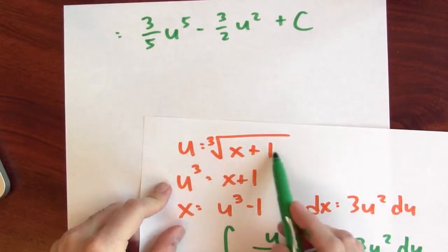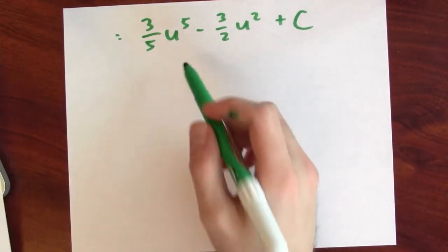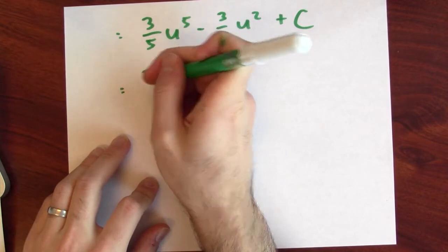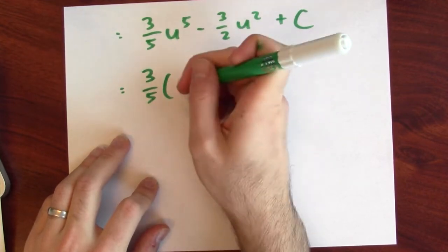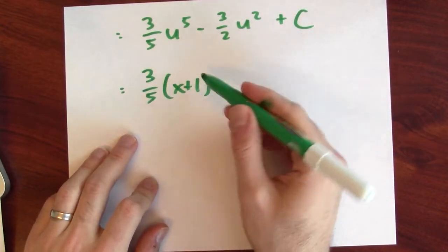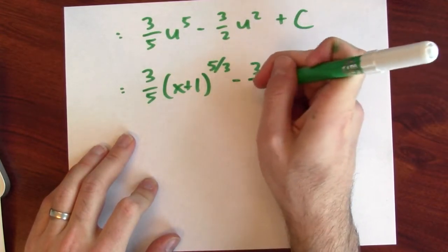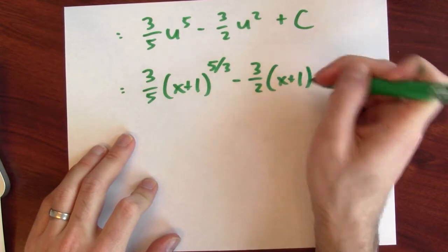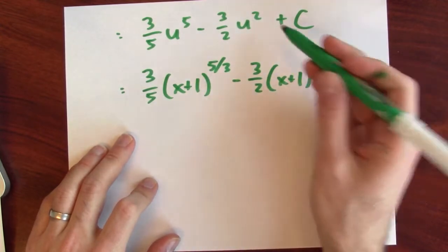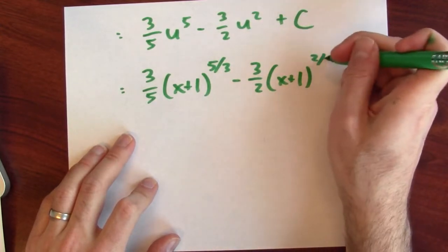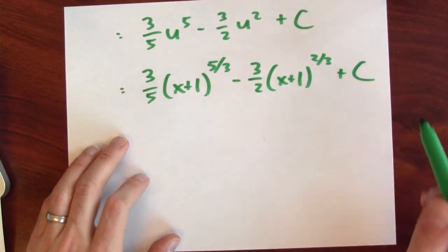Now we'll just replace u with what it equals in terms of x. So u, remember, is the cube root of x plus 1. So putting that in here, I get 3 fifths. And instead of u, it's x plus 1 to the 1 third to the fifth. So to the 5 thirds power minus 3 halves x plus 1 to the 1 third squared, which is to the 2 thirds power plus c.